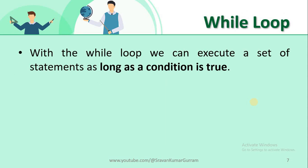The main purpose of the looping concept is to execute a statement or set of statements repeatedly. Coming to the while loop, it can be used to execute a set of statements as long as the given condition is true. In the syntax, we create one condition. If the condition is true, the statements execute repeatedly. When the condition becomes false, control exits the while loop. This is the execution procedure for the while loop.